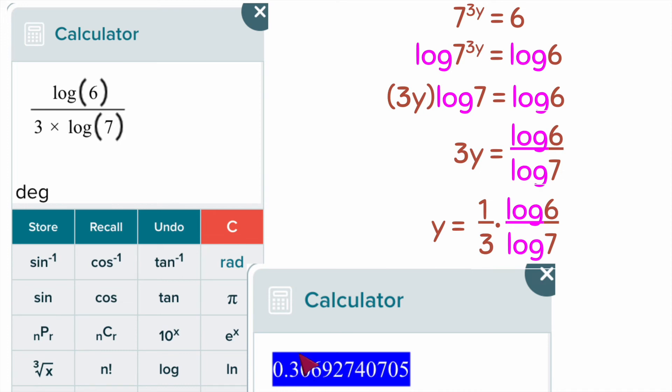So the nearest hundredth - I have tens, hundredths, thousandths. So I'd go to hundredths. So it'd be 0.31 because that 6 would round us up there.